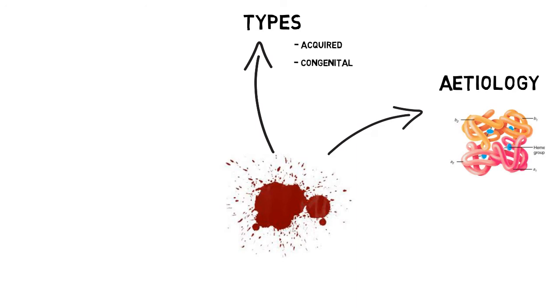This causes an imbalance in the number of globin chains in the red blood cell itself, which ultimately leads to red blood cell destruction, thus hemolytic anemia.